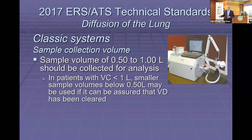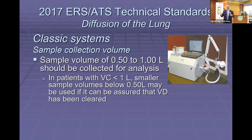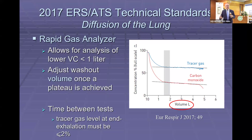This is a picture of a really old classic system — it has the bag for collecting the expired gas. It used to require a preset washout volume to get rid of dead-space air, and then a preset sample volume — that's the gas volume that was analyzed. Those are the classic systems. With the new rapid gas analyzers, you just wait until both the tracer gas and carbon monoxide reach a plateau. The dead-space volume and sample volume become irrelevant — you just need to reach a plateau.